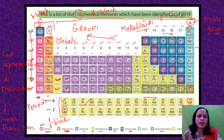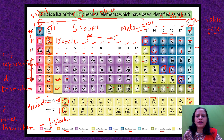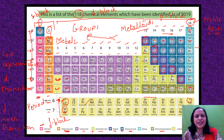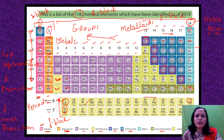In the F-block, starting from atomic number 57 onwards, these are known as lanthanides because the first element is lanthanum and the rest follow it. Similarly, after 89, the series is known as actinides because the first element is actinium. I hope you are now clear with the various types of classifications that can be done using the modern periodic table. Thanks for watching and I hope you find this video informative.